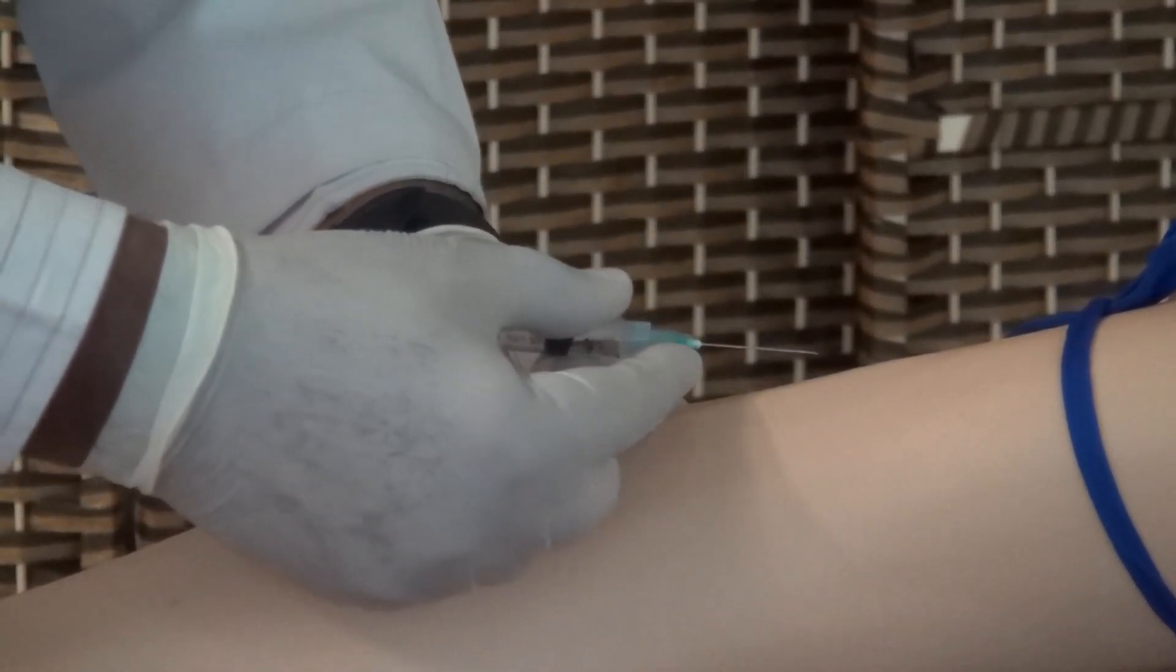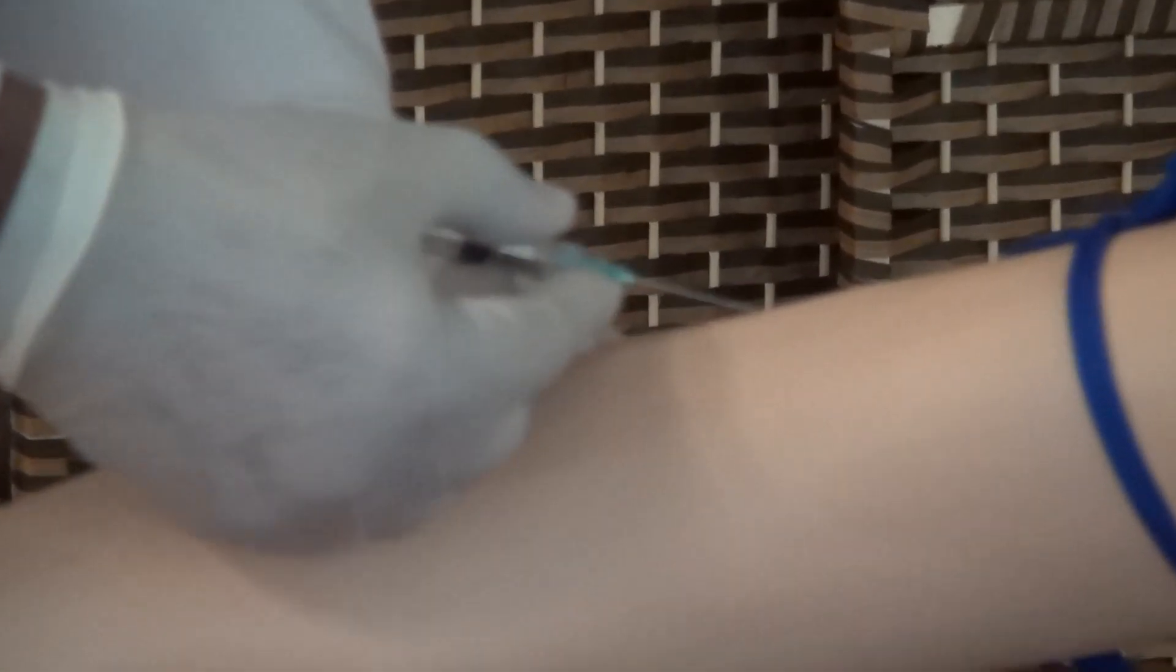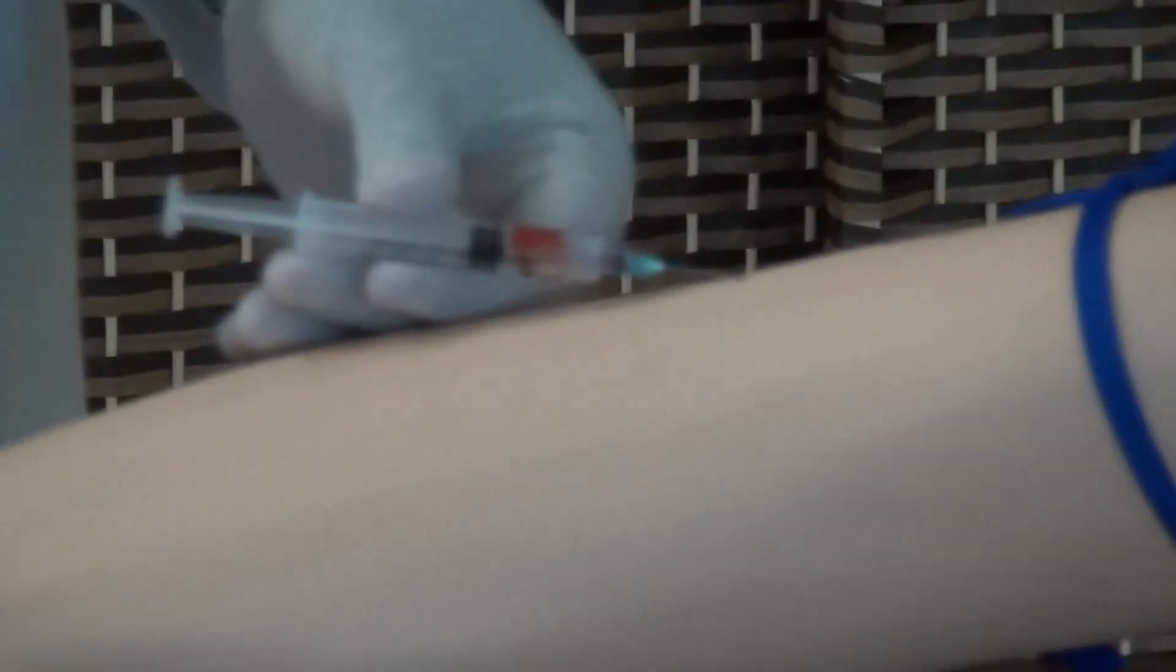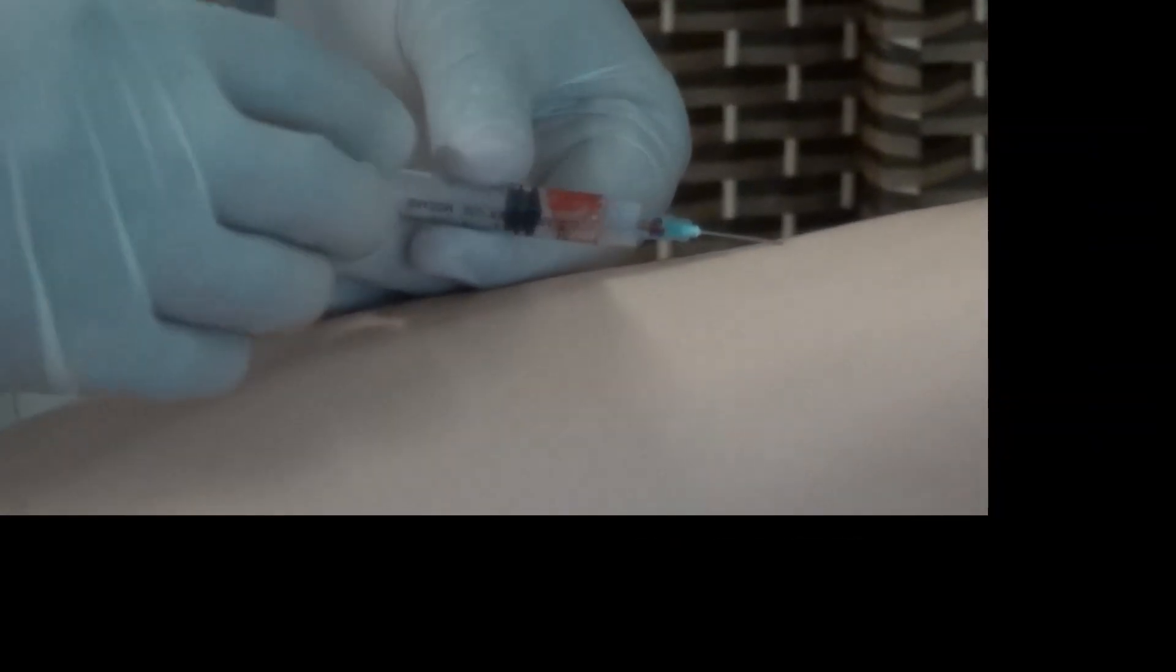Here we go. Along this, you try to fix the vein and then slowly, once you enter, there will be a little give way. Try to draw back some blood so that it's now clear that you are actually within the vessel. Release the tourniquet. And then, once you have ensured that you are within the vein, then just push the drug slowly into the vein.